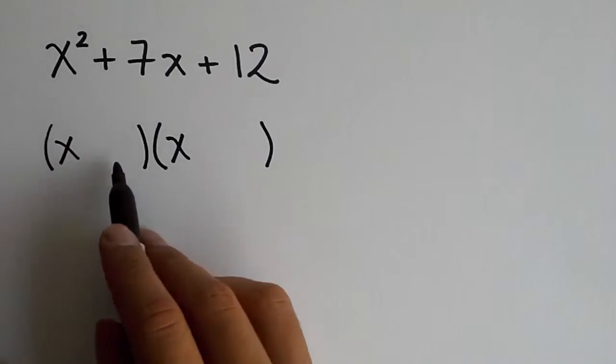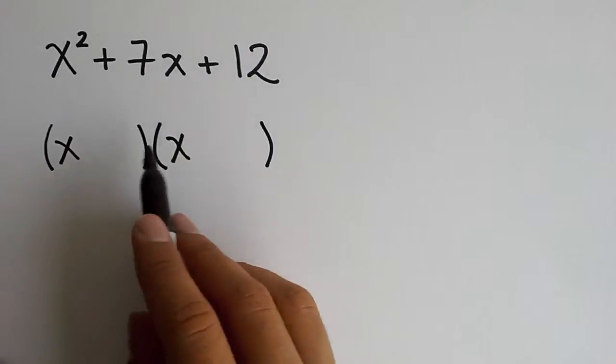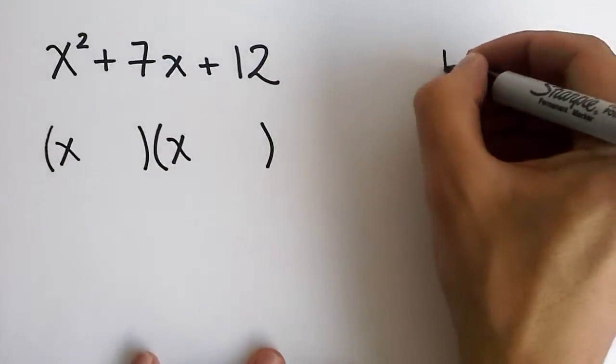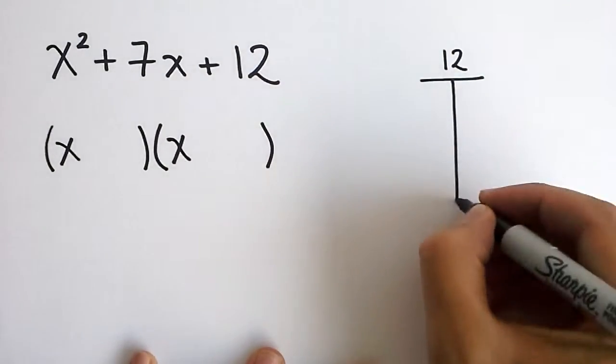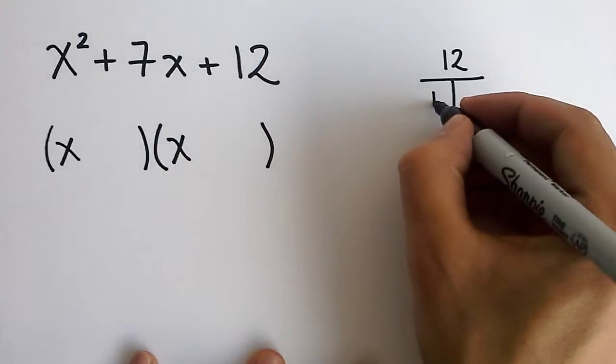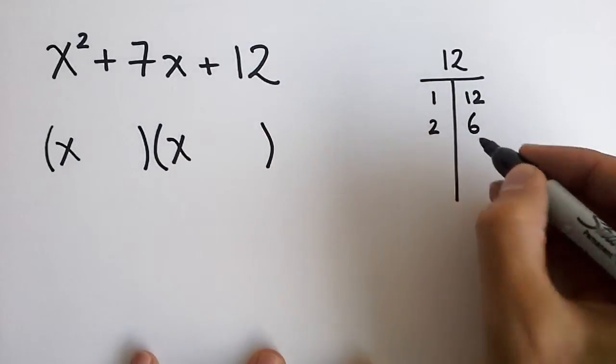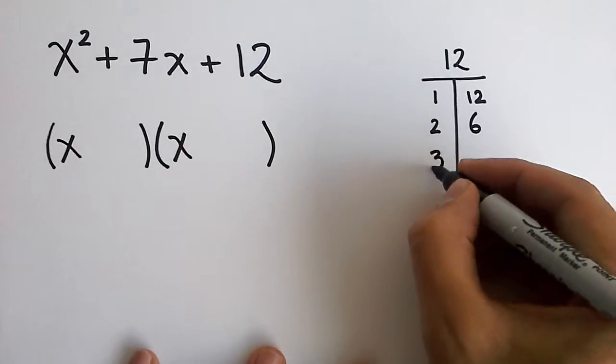Now, for the second terms of each parentheses, we want to put numbers that multiply to 12. But if you check out the factors of 12, there are several pairs that achieve that. You can think of 1 and 12, you can think of 2 and 6, and you can think of 3 and 4.